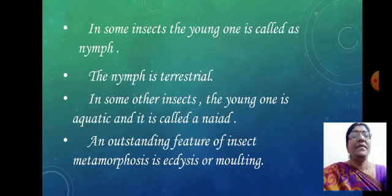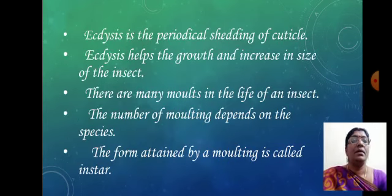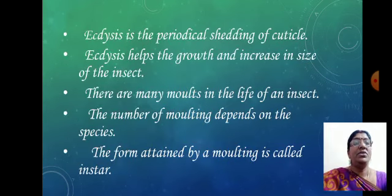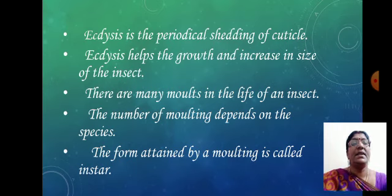An outstanding feature of insect metamorphosis is ecdysis, or molting. Ecdysis is the periodical shedding of the cuticle, and it helps the growth and increase in size of the insect. There are many molts in the life of an insect, and the number of molts depends on the species.